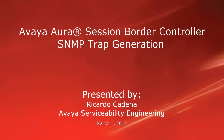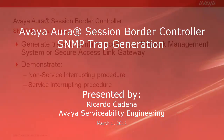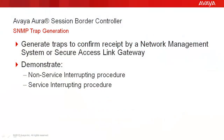This video covers the generation of Avaya Aura Session Border Controller SNMP traps. Generating Avaya Aura Session Border Controller SNMP traps may be required in order to confirm the ability for a network management system or a secure access link gateway to receive traps generated by the SBC. We will demonstrate a non-service interrupting procedure to confirm general traps can be received by a destination or target, as well as a service interrupting procedure to confirm the ability for a destination to react to events that would indicate a disruption of supported features or server functionality.